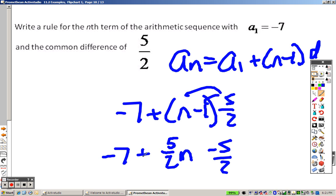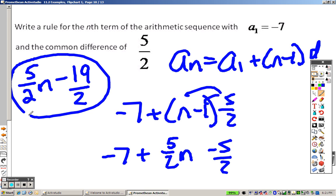And I have a negative 7 here. So when I combine my like terms, a negative 7 plus a 5 halves, or sorry, plus a negative 5 halves, actually ends up giving you negative 19 over 2. So really it's 5 over 2 times N minus 19 over 2 is the formula when you combine those two together. You end up getting negative 19 over 2.